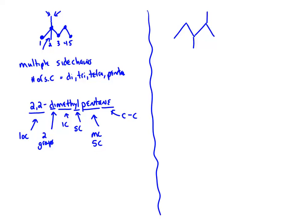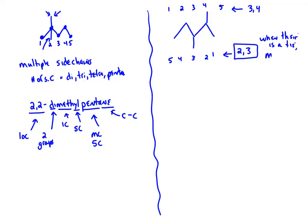If I look at this next molecule, should I start numbering from the left or the right? Notice it gives me some differences. If I start numbering one way, 1, 2, 3, 4, 5, my side chains are on carbons 3 and 4, but in the other numbering scheme my side chains are on carbons 2 and 3. The tiebreaker is we number so that the side chains have the lowest numbers. So this would be 2,3-dimethylpentane — the first number has to be the smallest possible number.